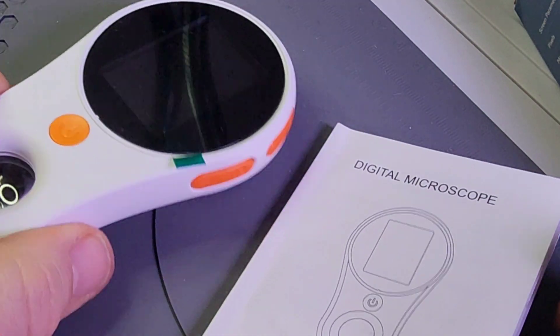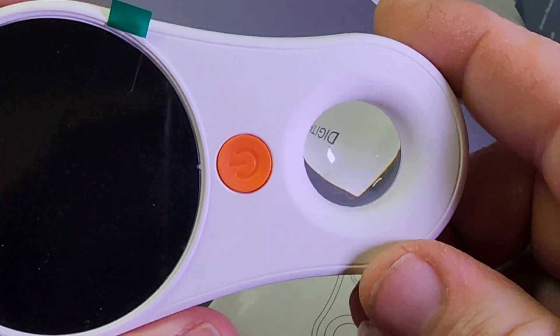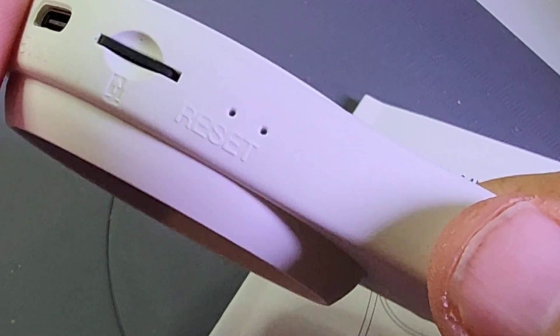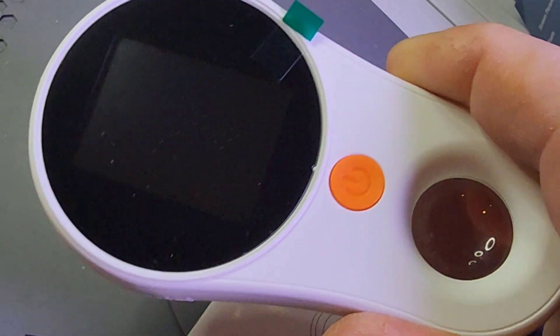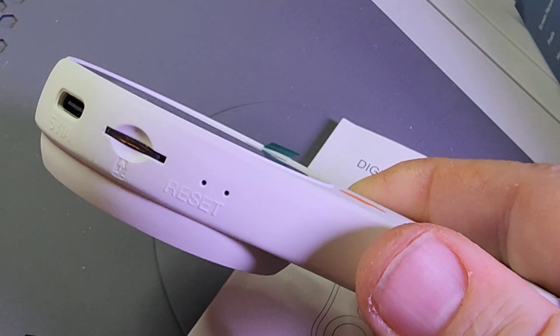It's pretty basic, but it touches on the odds and ends that you're going to need to use this magnifying glass slash microscope. On the back of it, you can see we do have an SD card reader as well, and a rechargeable by USB-C input.